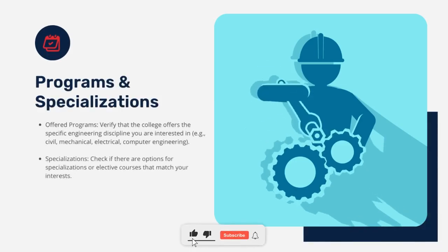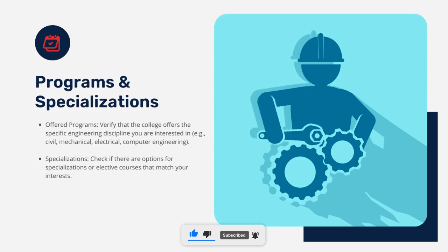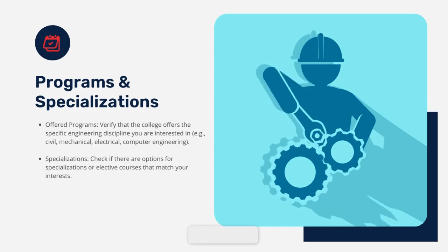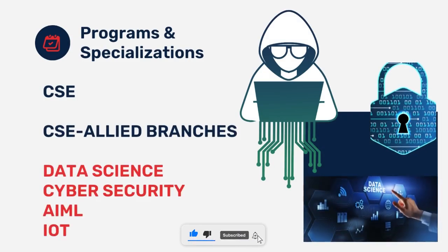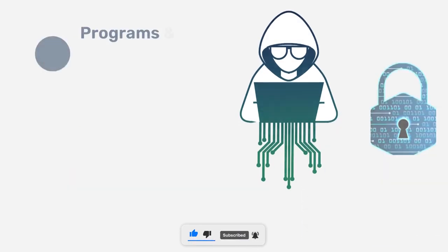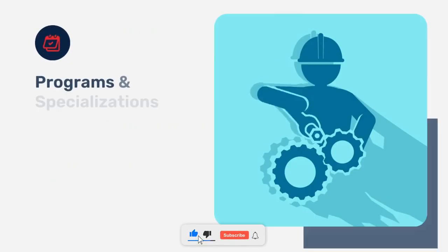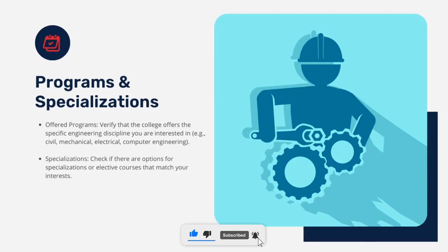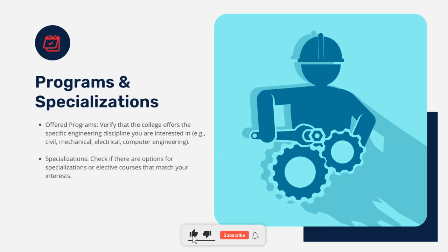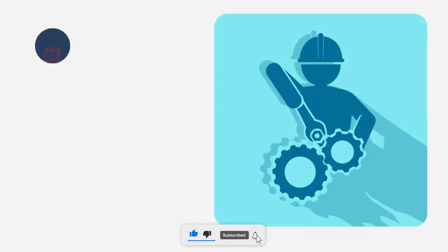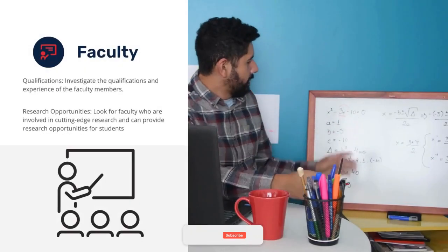The next key factor is the courses and specializations offered. For example, if you are a CSE aspirant and have a CSE seat, check that the college offers CSE courses. Also cross-check the specializations available within that branch, as top colleges offer elective and L&T courses.